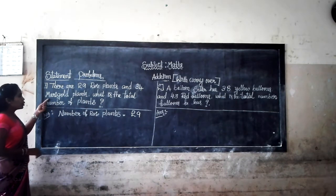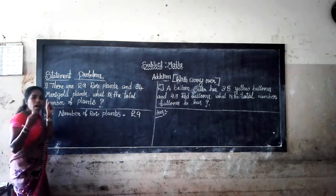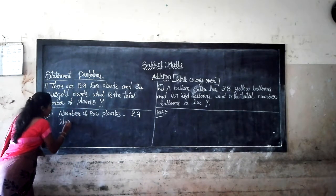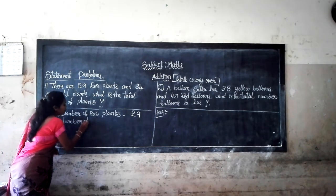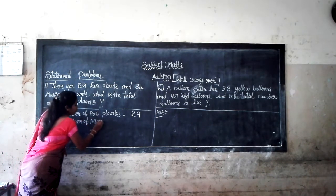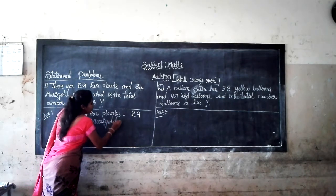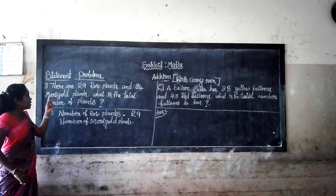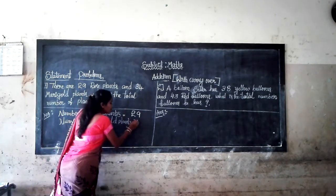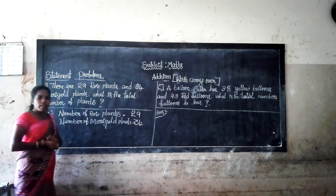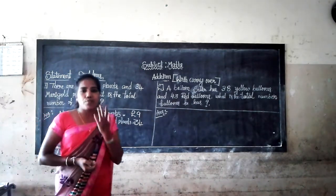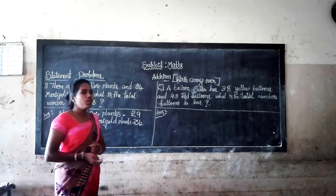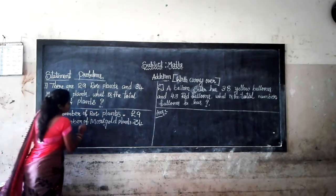Next, there are two families of plants here. One is the rose plants and the other one is marigold plants. Number of marigold plants are 34. Now let's find out the total number of plants — including rose plants and marigold plants.